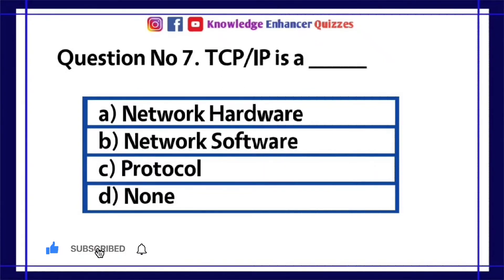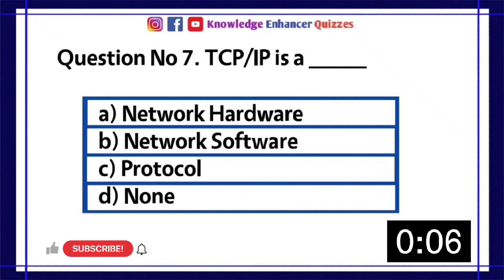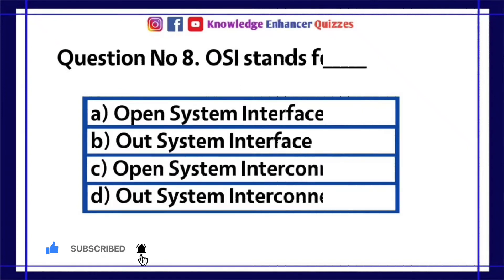Question number 7. TCP/IP is a — A. Network hardware. B. Network software. C. Protocol. D. None. Option C is the right answer.